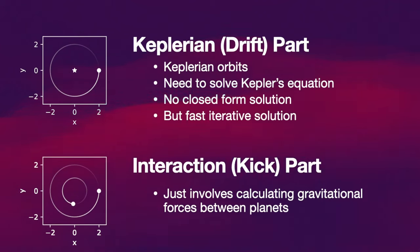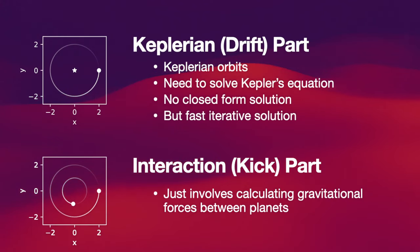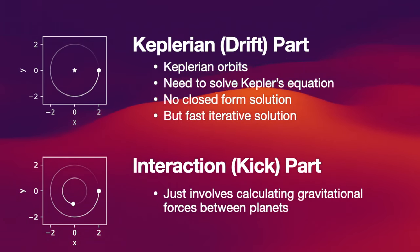Specifically, this could be Newton's method, it could be a quartic solver, or it could be the bisection method in case everything else fails. You do not have to worry about how Kepler's equation is solved — WHFAST is doing that for you. The interaction part, on the other hand, is very easy to calculate. This just involves calculating the gravitational forces between planets, excluding the star. The interaction part is also called the kick part, or the kick step, sometimes.